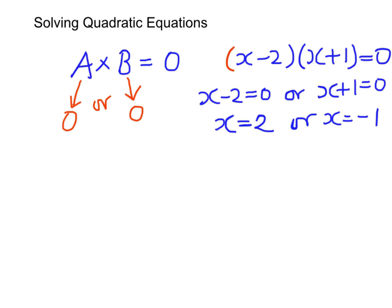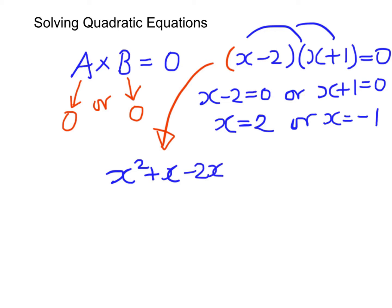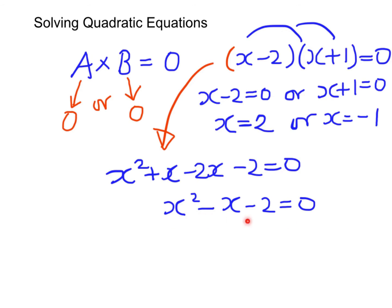But in fact, we can see that the original equation on the left-hand side is in factor format. And what if we expand these two factors? We will have x squared plus x minus two x minus two equals zero, which we can simplify as x squared minus x minus two equals zero.